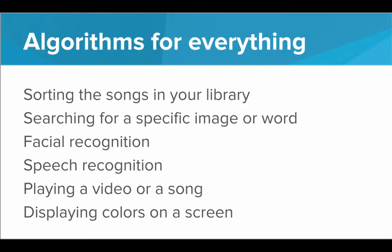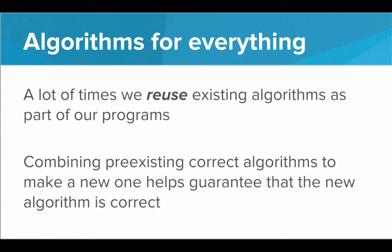There are algorithms for everything these days, and people are coming out with crazier and crazier algorithms that do really cool things. There are algorithms for sorting songs in your library, for searching the internet for a specific image or word, for helping a computer recognize faces, recognize speech, play video or music, and display colors on your screen. A lot of times we reuse pre-existing algorithms as building blocks in our larger programs. By combining these pre-existing algorithms that we know to be correct, we put them together and make a brand new algorithm.